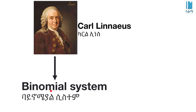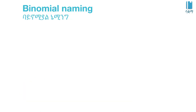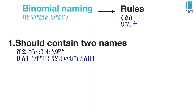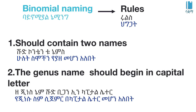Carl Linnaeus introduced the binomial system and established rules and criteria for it. The binomial naming system has specific rules to follow. One of the main rules is that an organism's scientific name should contain two names.